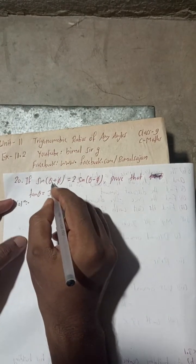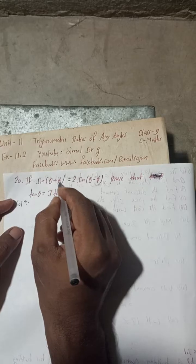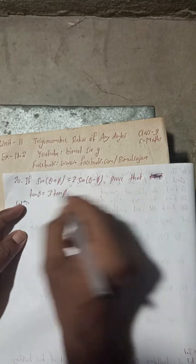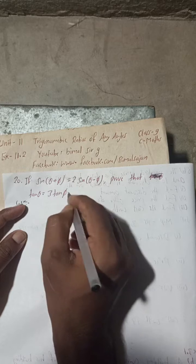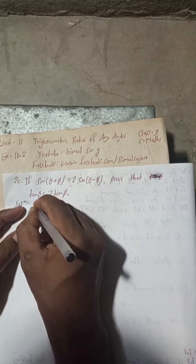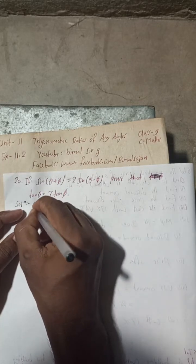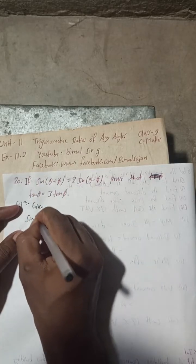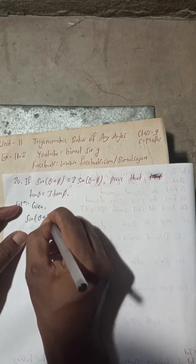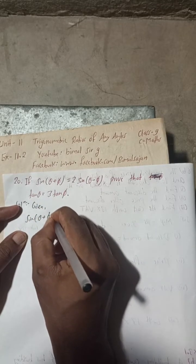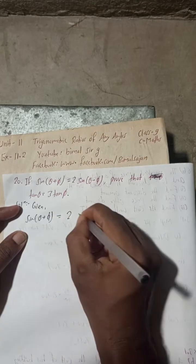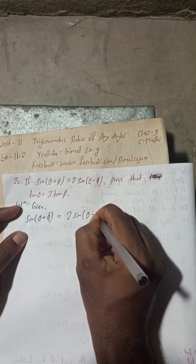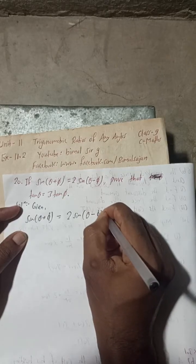If sine of (theta plus phi) is equal to 2 sine of (theta minus phi), prove that tan theta is equal to 3 tan phi. So the given part is: sine(theta + phi) is equal to 2 sine(theta minus phi).